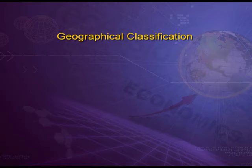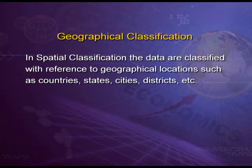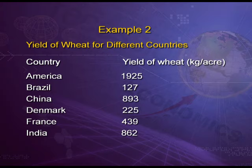The next type is geographical classification, also known as spatial classification. In this, data are classified with reference to geographical locations such as countries, states, cities, or districts. For example, yield of wheat for different countries: America had 1925 kg per acre, Brazil 127, France 439, and India 862. So we have classified data on the basis of geographical locations or countries.